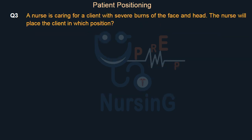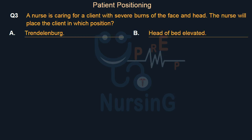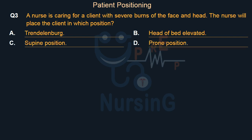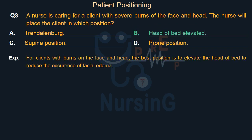A nurse is caring for a client with severe burns of the face and head. The nurse will place the client in which position? Option A, Trendelenburg; Option B, head of bed elevated; Option C, supine position; Option D, prone position. The right answer is Option B, head of bed elevated. For clients with burns on the face and head, the best position is to elevate the head of bed to reduce the occurrence of facial edema.